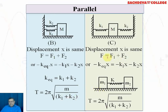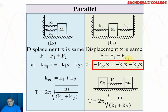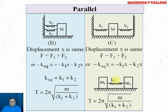In Figure C, the displacement x is again the same since k1 and k2 are again in parallel. The total force f = f1 + f2 = −k1·x − k2·x, and eliminating x gives the same result as Figure B. Therefore, the time period is again T = 2π√(m/(k1+k2)).